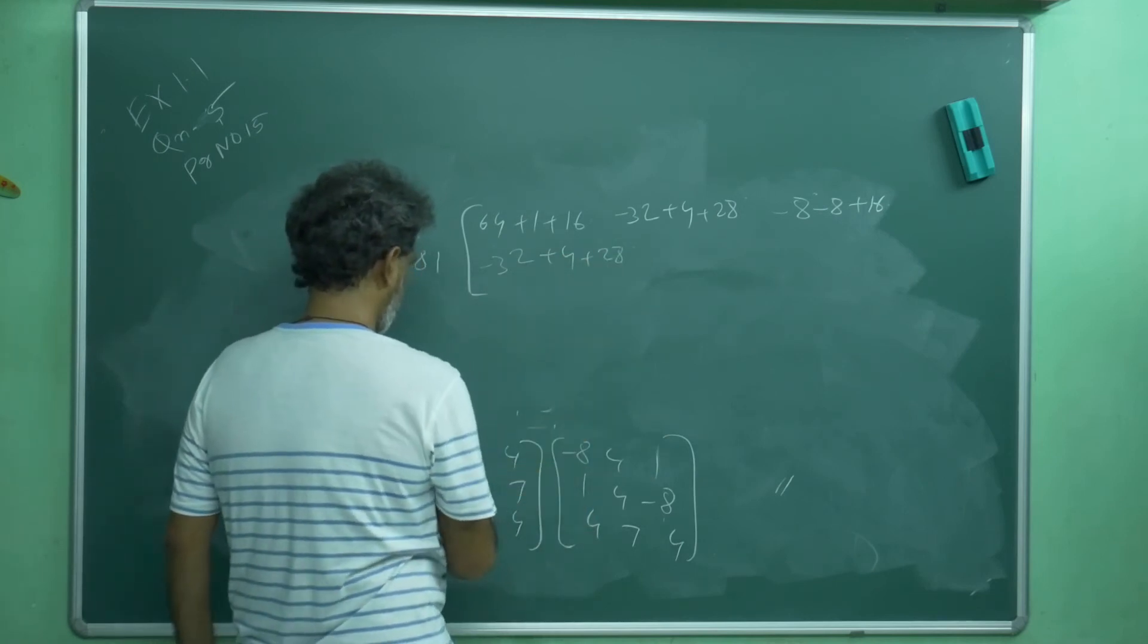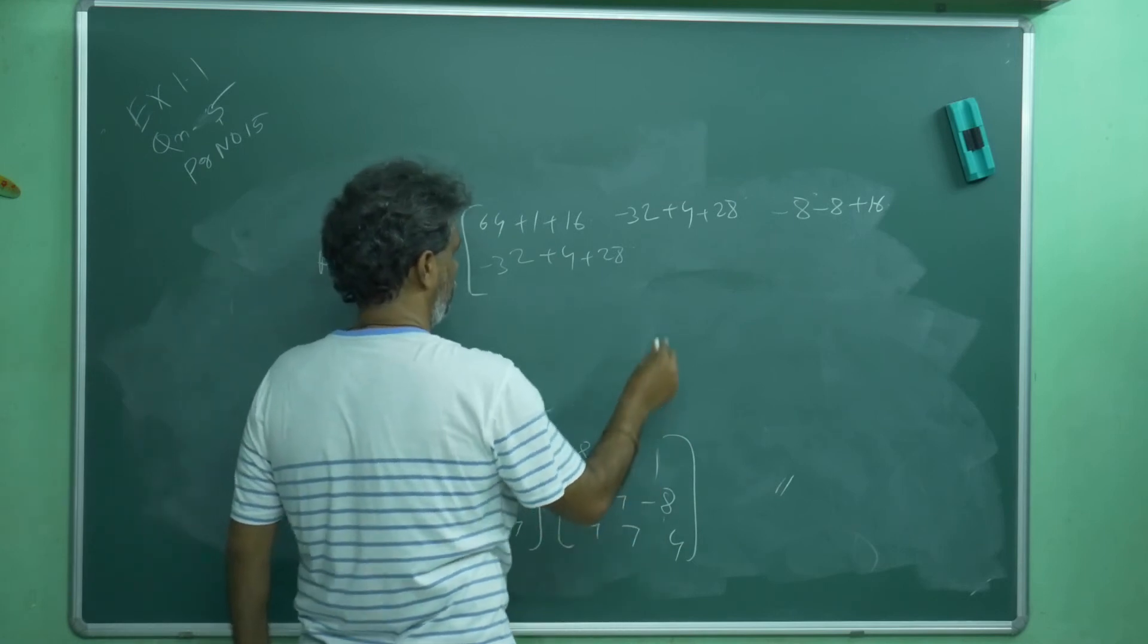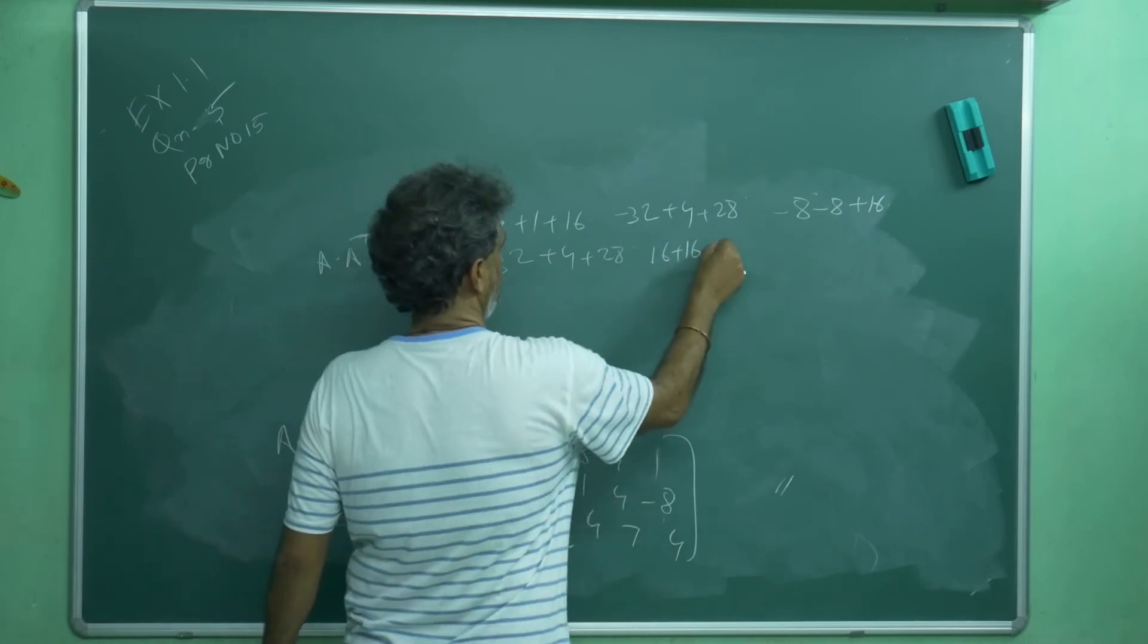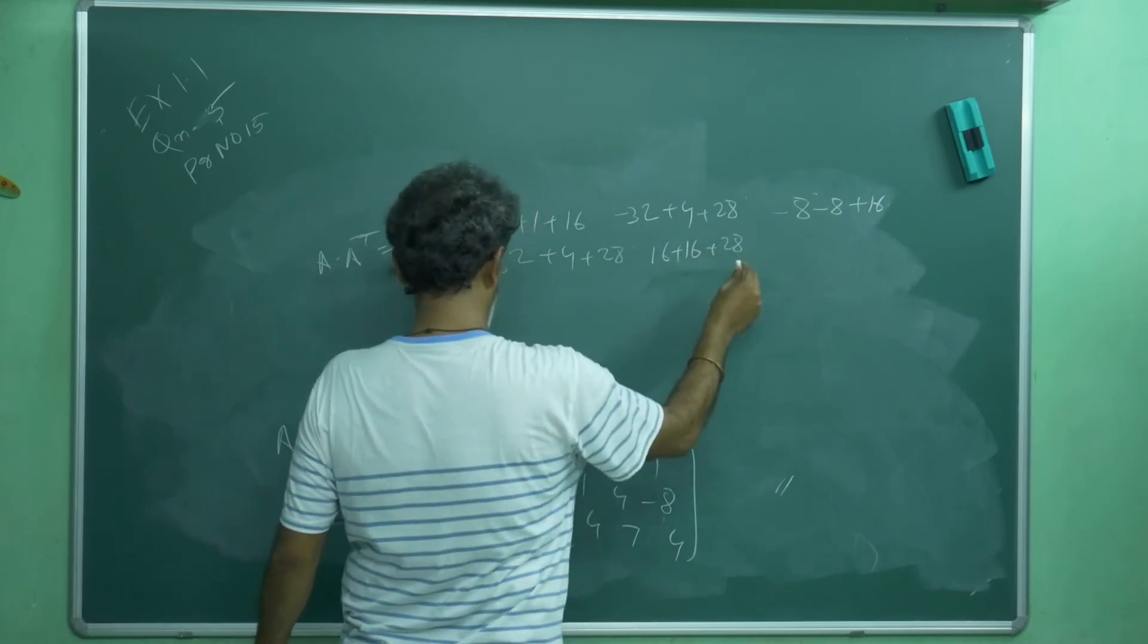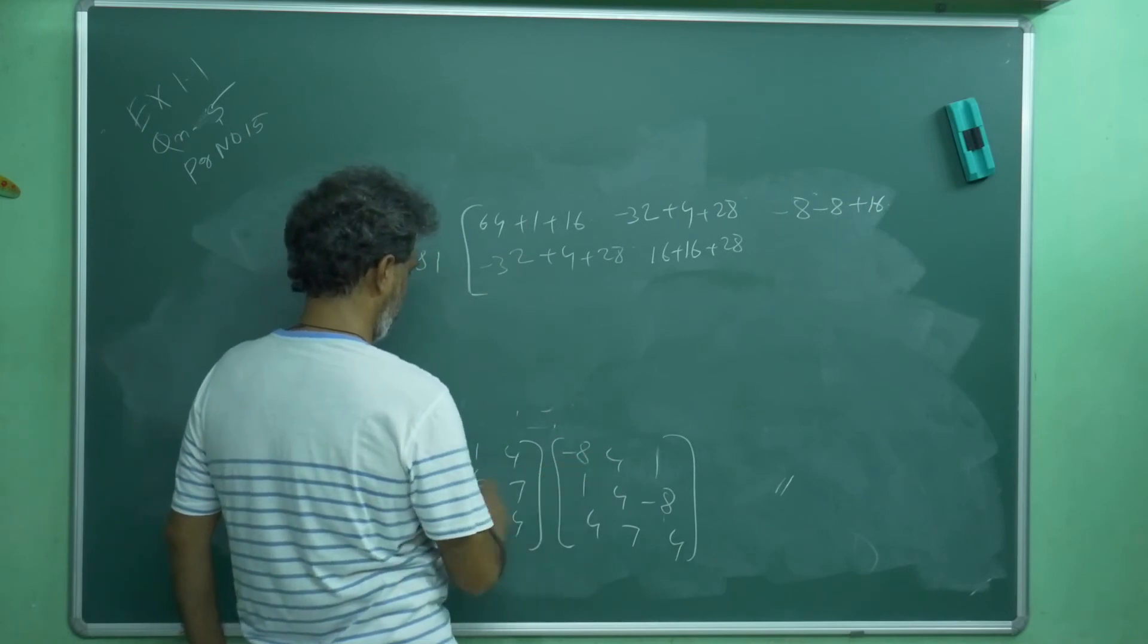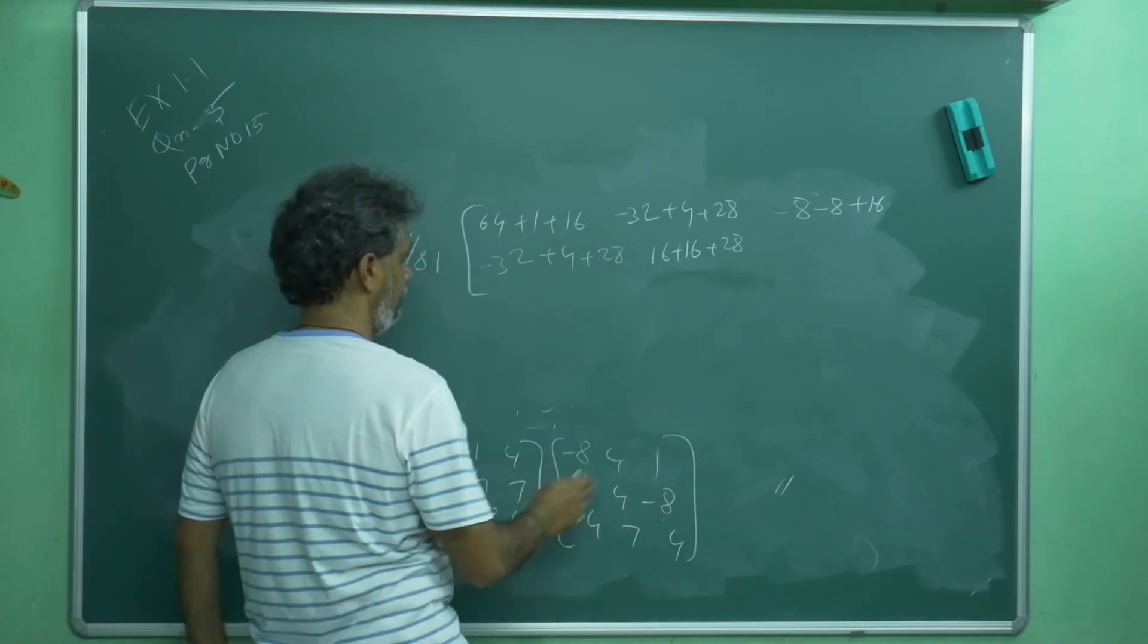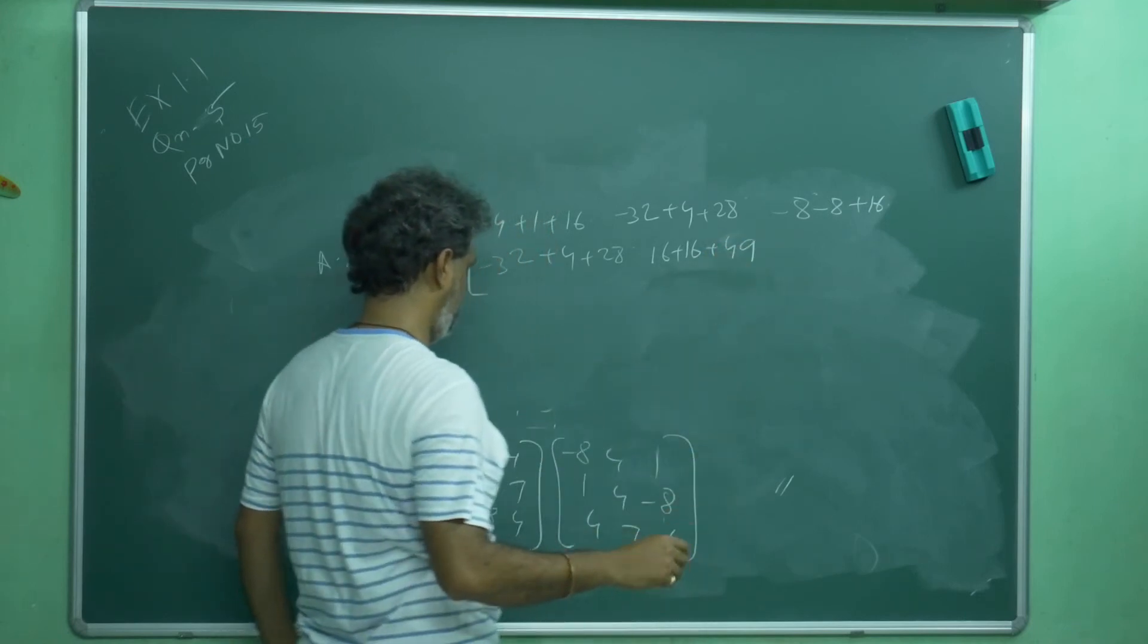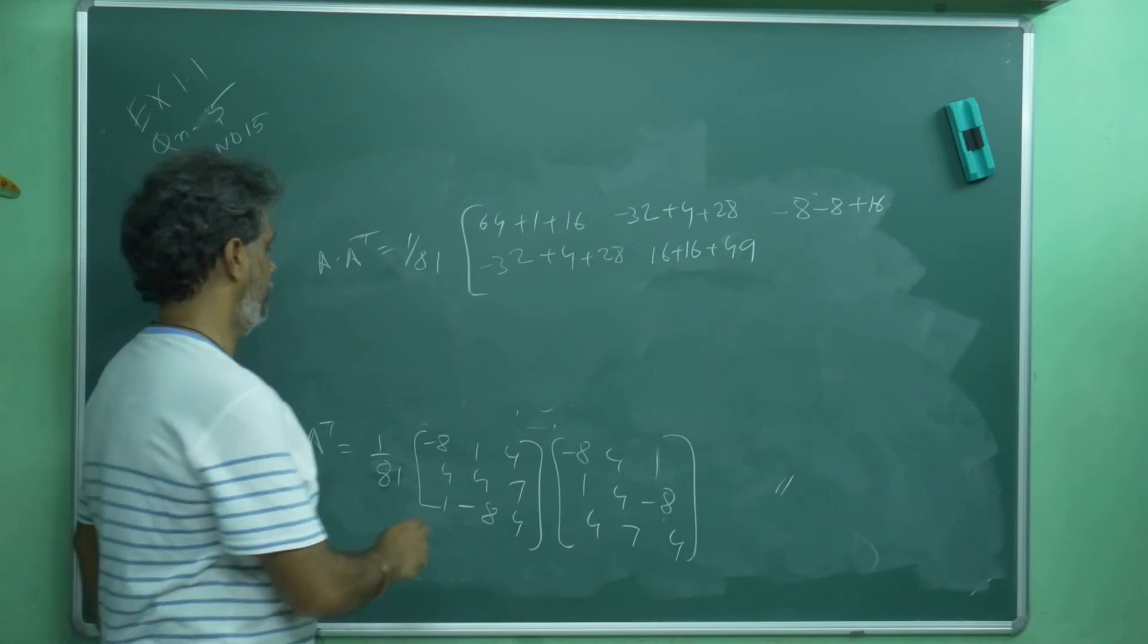Second row, second column: 16 plus 16 plus 28. Correct? No, no. Second row, second column: 16, 16, 49.